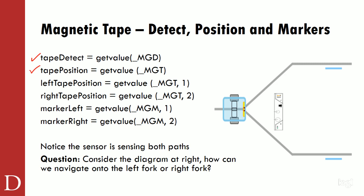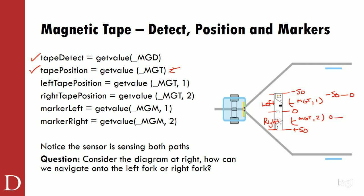We've also been doing tape position, getting it off the MGT value. This is where it's a little different today. Our MGT value said basically this half was negative 50, dead center was zero, and over here was up to positive 50. The sensor is actually divided into two halves — left and right. If you look at the left half of the sensor, what I'm doing is reading 'get value MGT1' — that goes from negative 50 all the way up to zero.